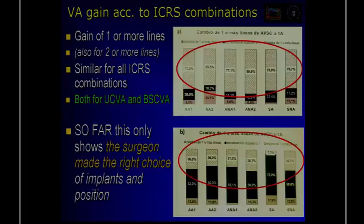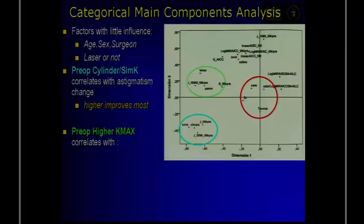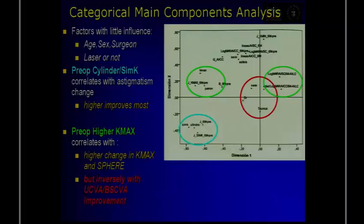This technique must be analyzed carefully. Every combination should be analyzed separately, and statistics can be analyzed in many different manners. This is the principal component analysis — a statistical approach showing that factors such as age, gender, and laser concentrate in the center, meaning they do not really affect the results.